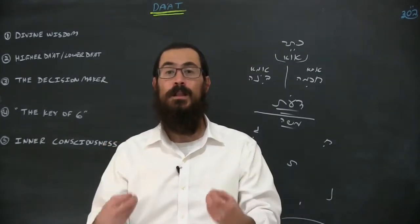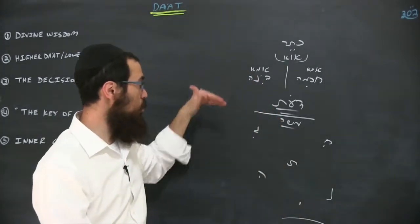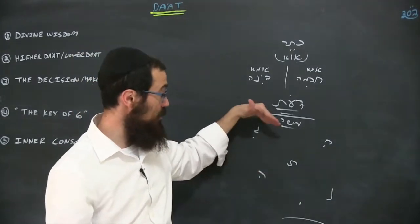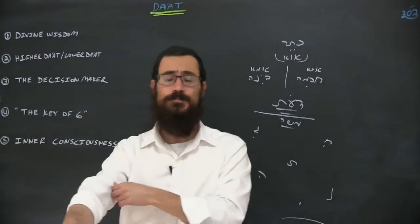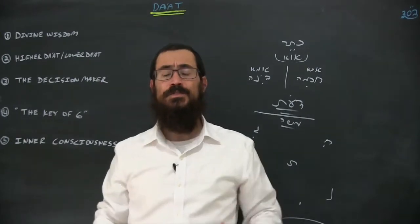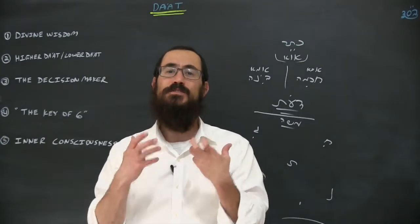We spoke about that on an intellectual level and how we have the ability to control the intellect, to control the emotions. Now all this brings us to number five: the inner consciousness. The inner really, that is really that inner consciousness.